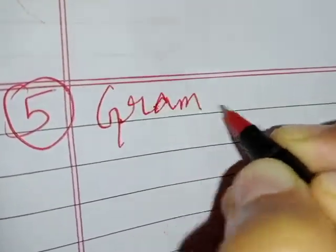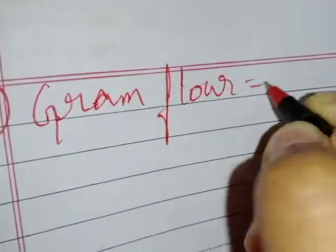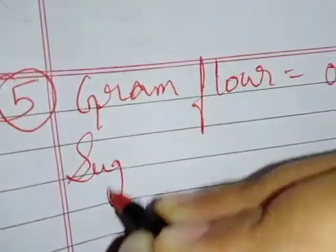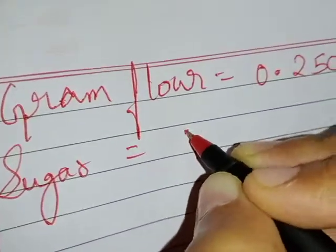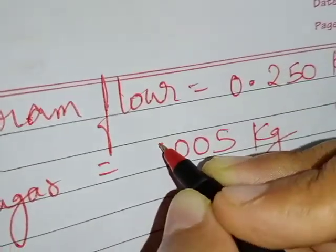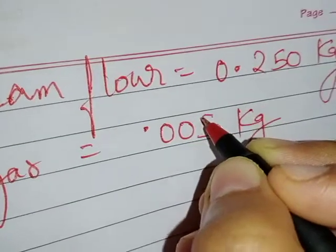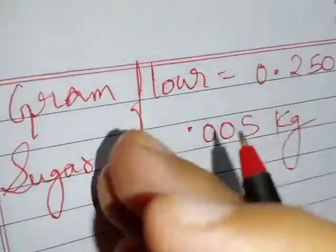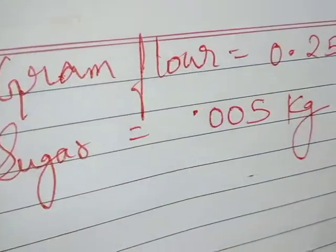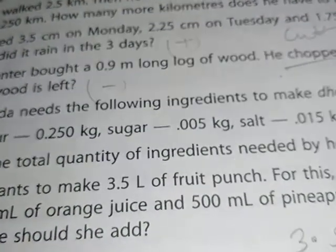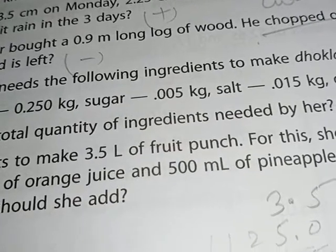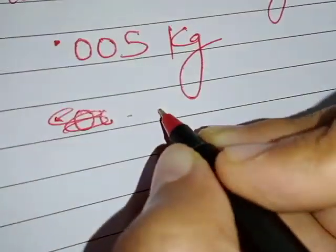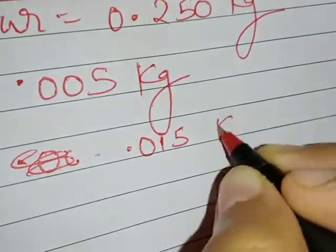Gram flour she wants 0.250 kg, then she wants sugar that is 0.005. Please pay attention to this point: if the digits are given after the point, that time the digits are in the decimal places. Don't write those digits in the integral part. If you will write in the integral part, your answer will be completely wrong. This is the decimal part. And then salt also is given after point, that is point zero one five. This is the amount of salt she wants.